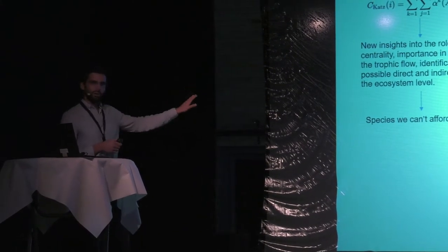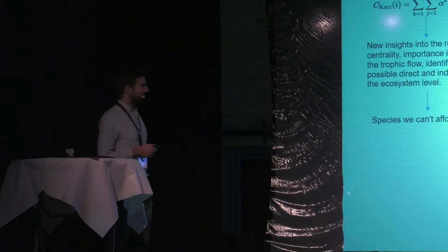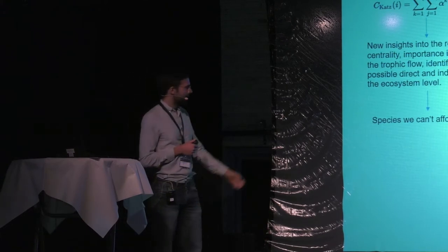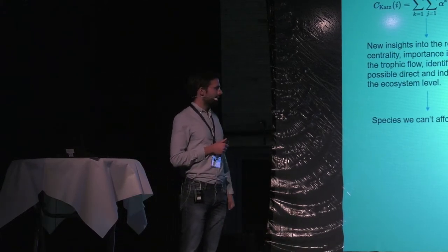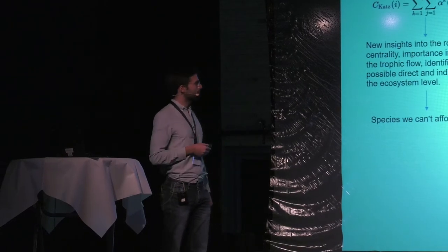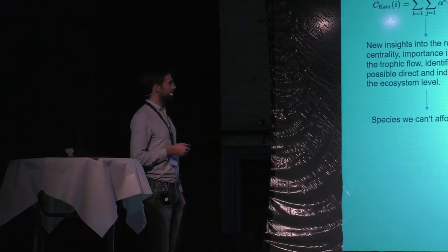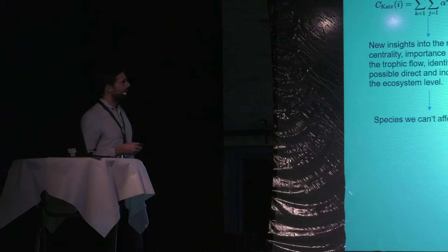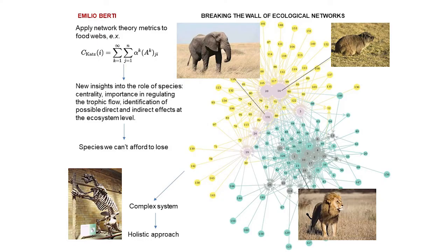The important thing is not the position of the species in this case, but the size of the node. And we can see that the lion has a relatively low centrality. But what's the most central species in the network? It's just a small hyrax. This is quite unexpected from a pure ecological point of view, especially for the lion, which is a top predator.